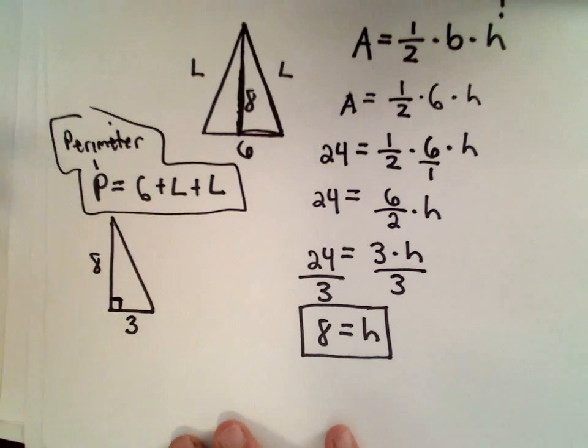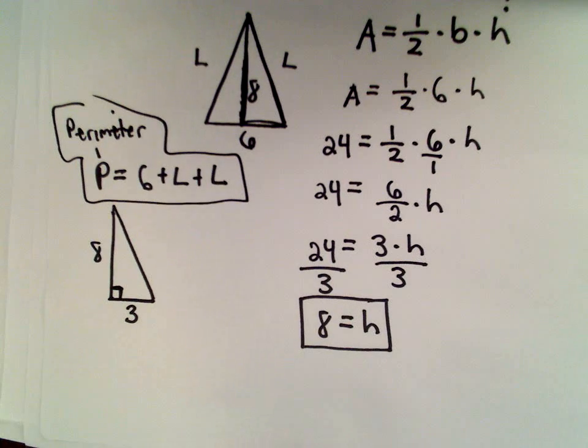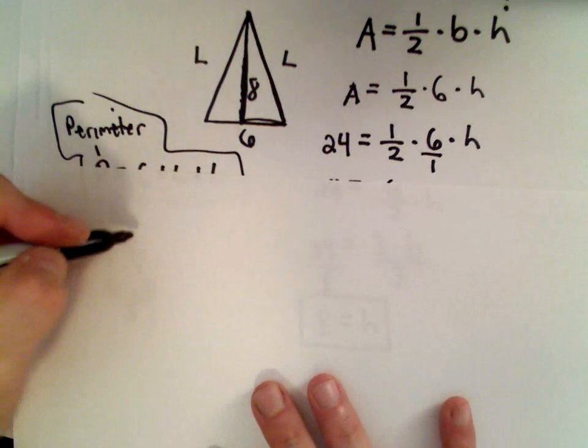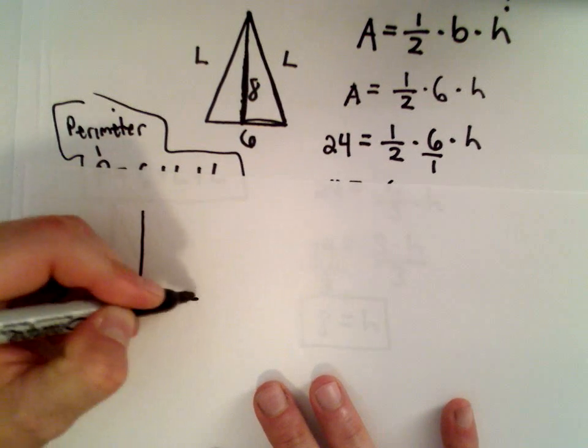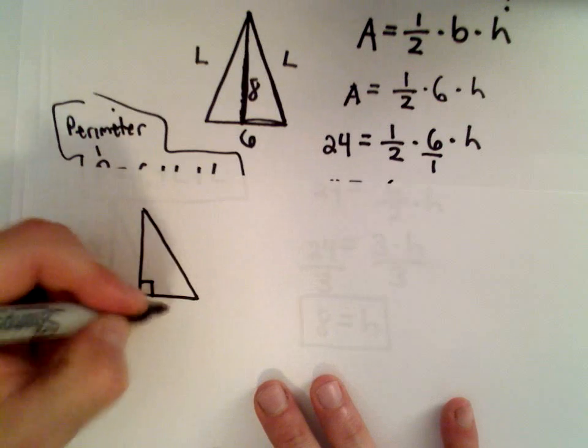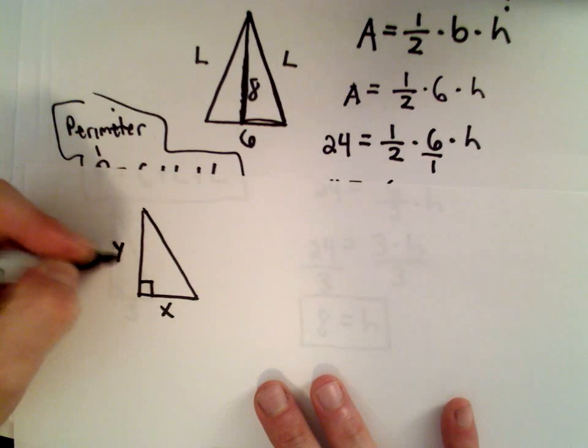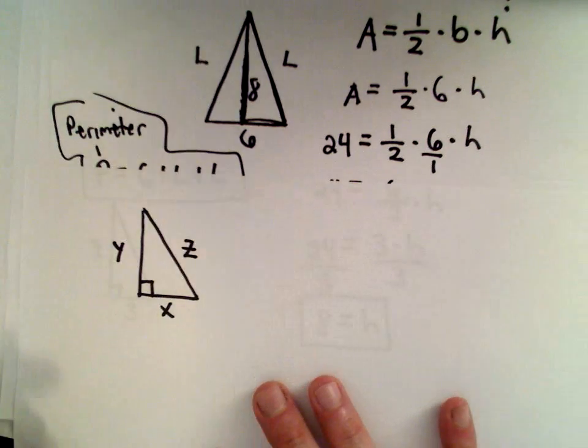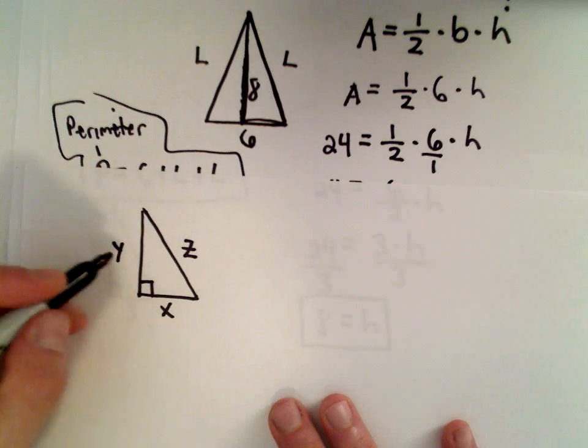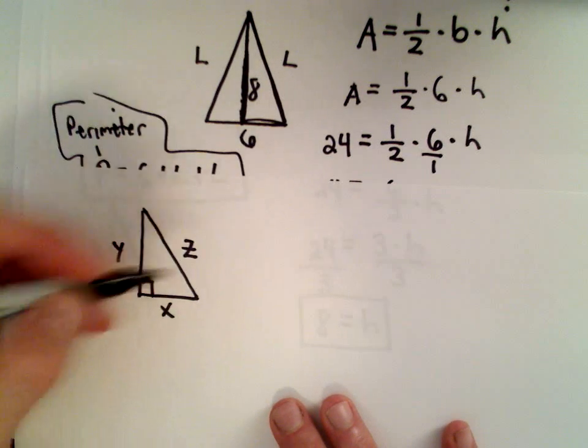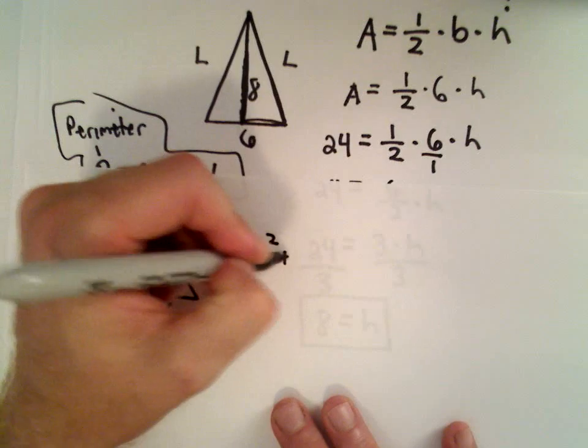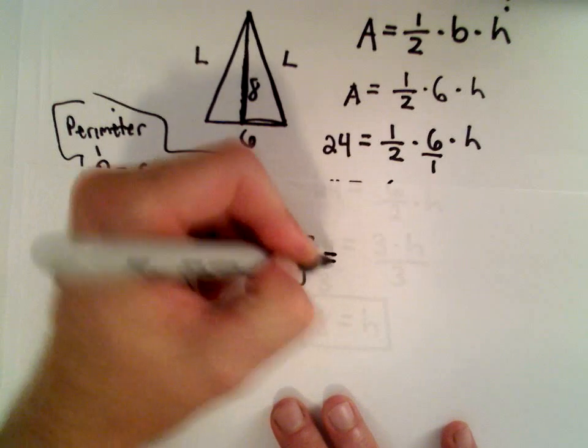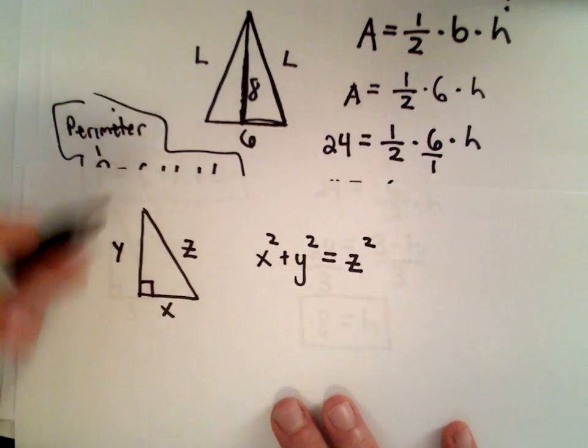So I've got a little right triangle here. And let me grab another piece of paper, just to remind you on the Pythagorean theorem. Let's maybe call this x, this y, and I'll call this side length z. Recall the Pythagorean theorem says if you take the side lengths, x squared plus y squared, that's going to equal the hypotenuse squared, the long side.